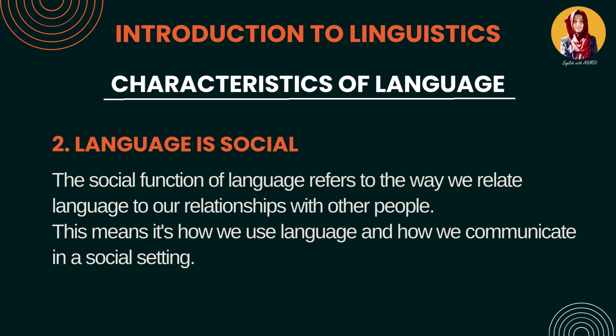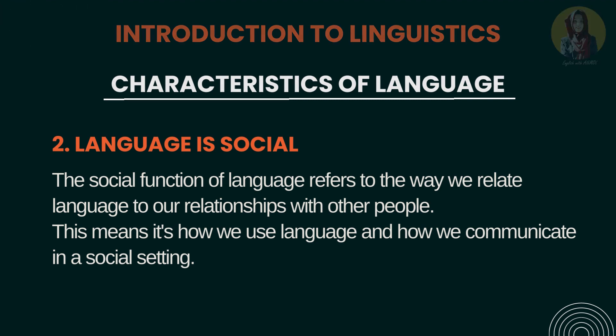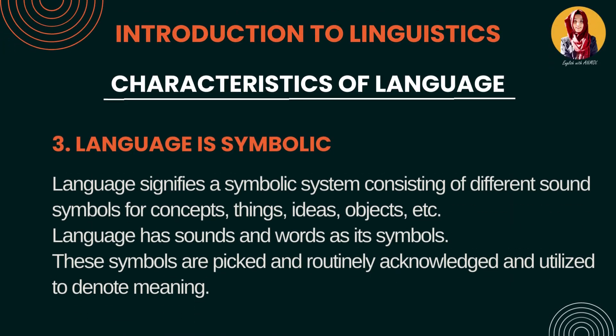Third: Language is symbolic. Language ek symbolic system rakhti hai — hamare paas different sounds hain aur symbols hain. Ideas, concepts aur objects ko denote karne ke liye hum log different symbols use karte hain. Isliye kaha ja raha hai ki language jo hai symbolic hoti hai, jisse hum log different meanings denote karte hain.